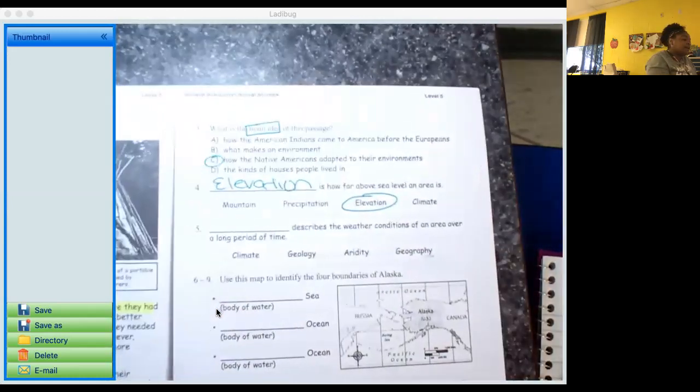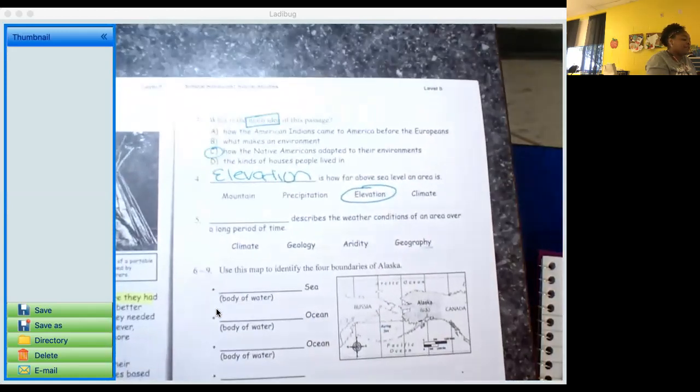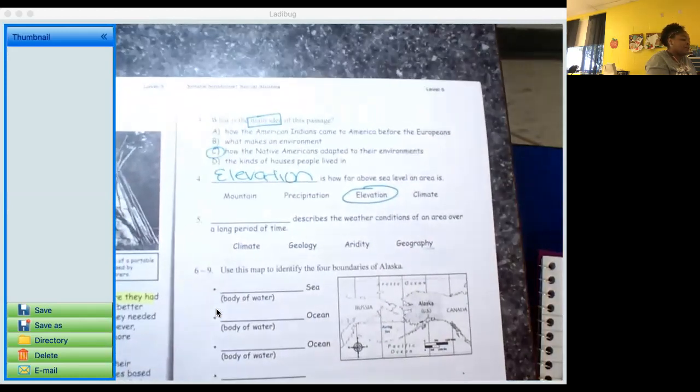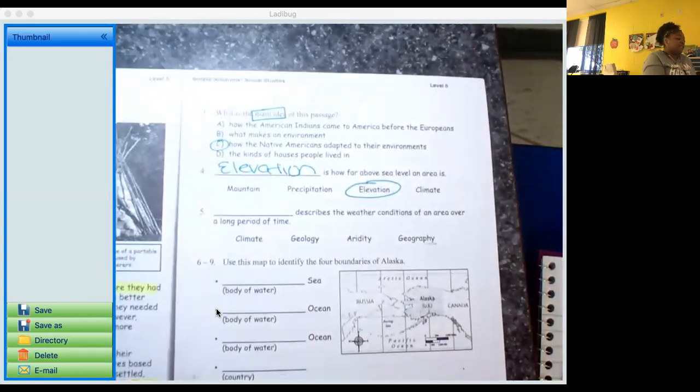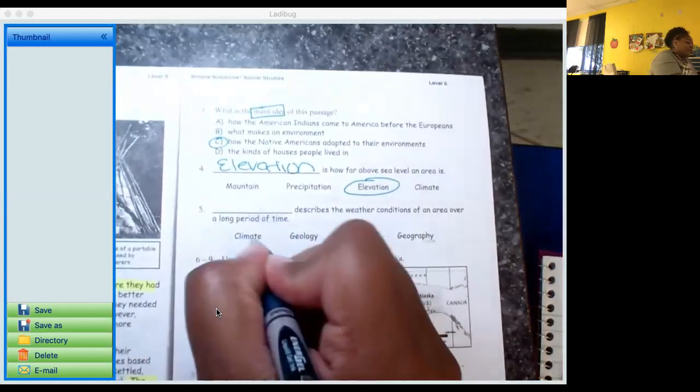Alright, number five. Blank describes the weather conditions of an area over a long period of time. This is from lesson seven, and the word that you should choose here is climate.